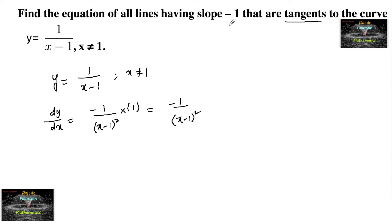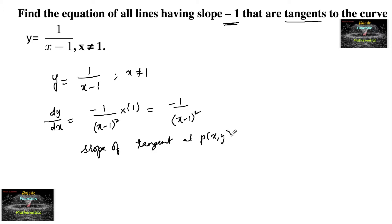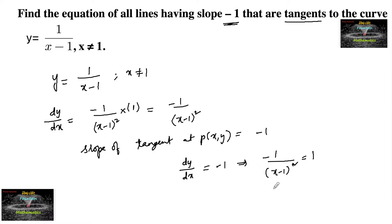Since the slope is given as negative 1, we consider the slope of tangent at point P equal to minus 1, that is dy/dx = -1. So we set minus 1 upon (x minus 1) whole square equal to minus 1, which implies that (x minus 1) whole square is equal to 1.